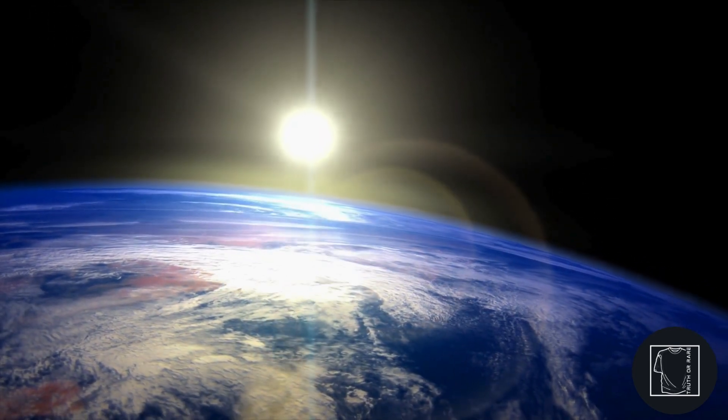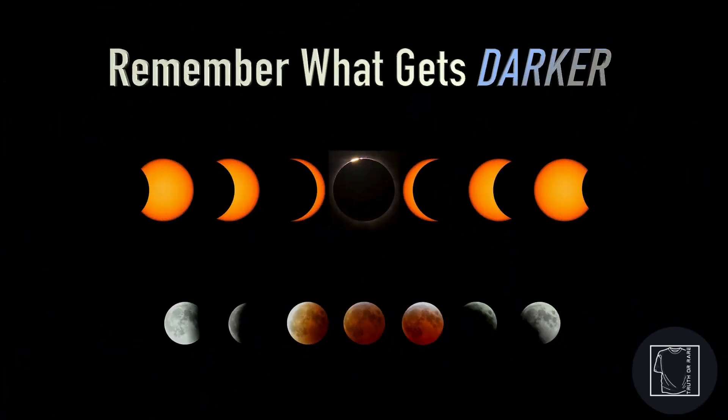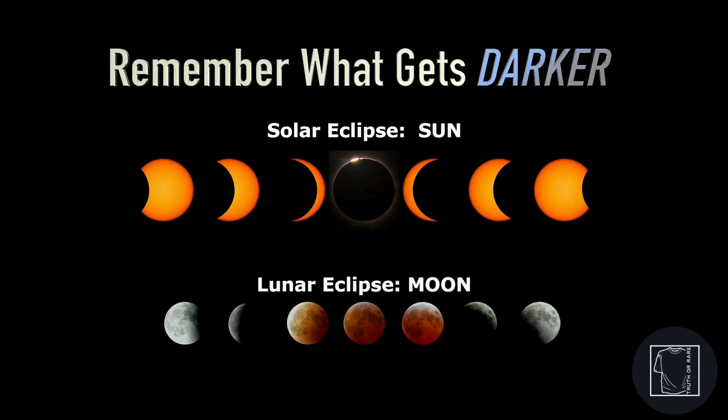The easy way to remember the difference is to remember what gets darker. With the solar eclipse, the Sun gets darker, and during a lunar eclipse, the moon does.